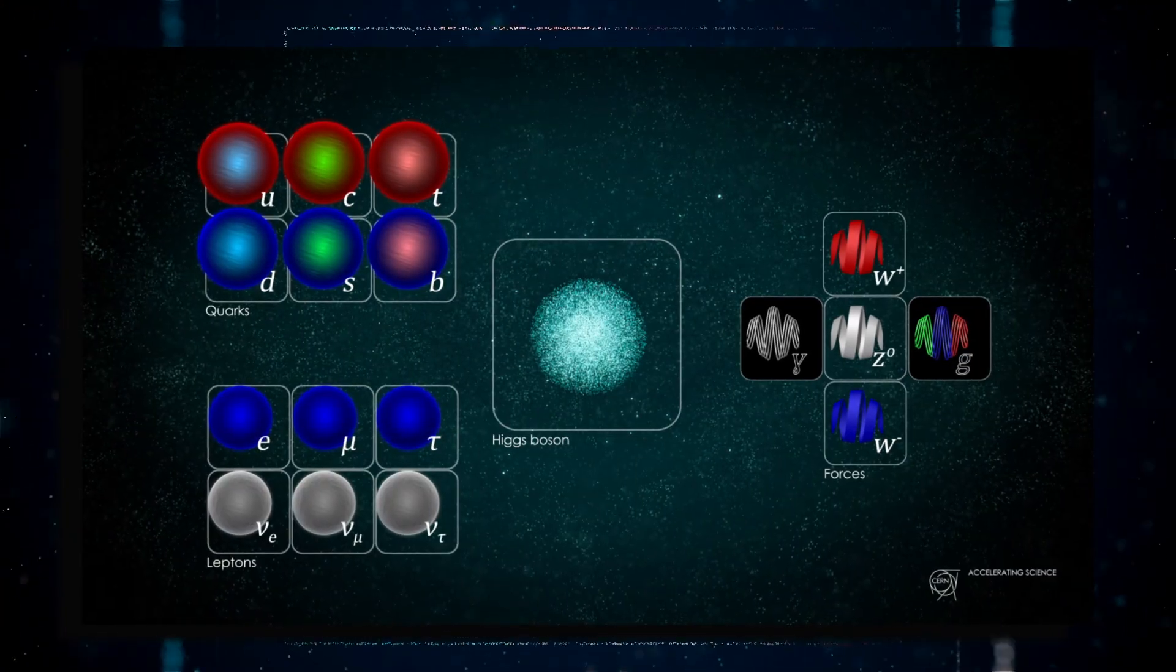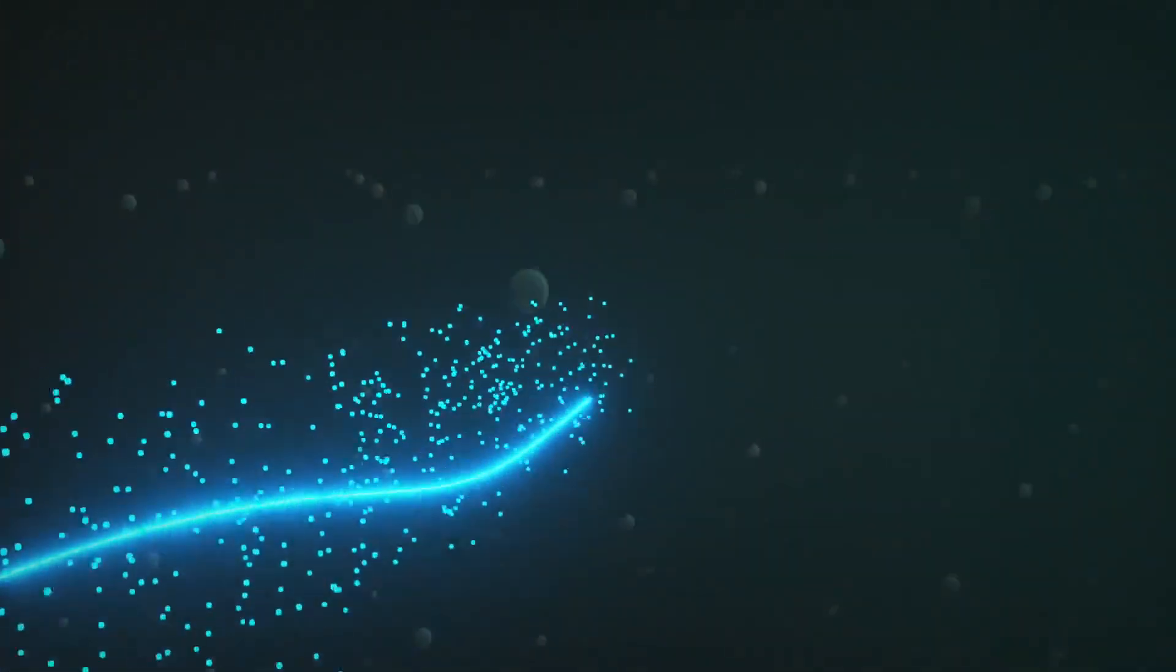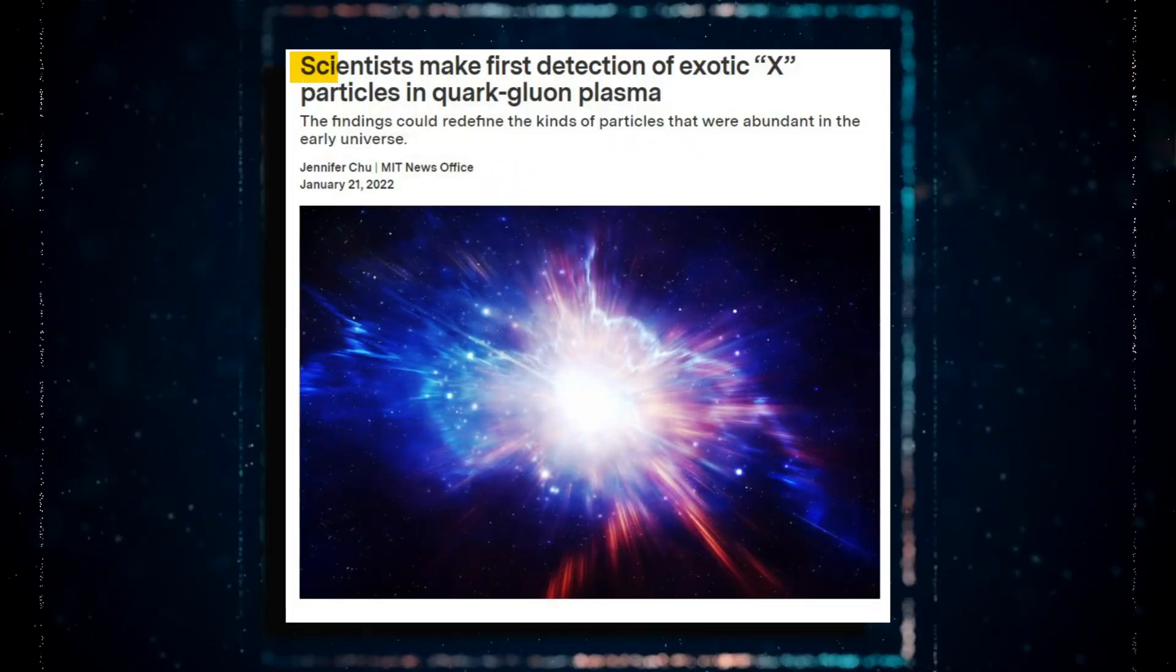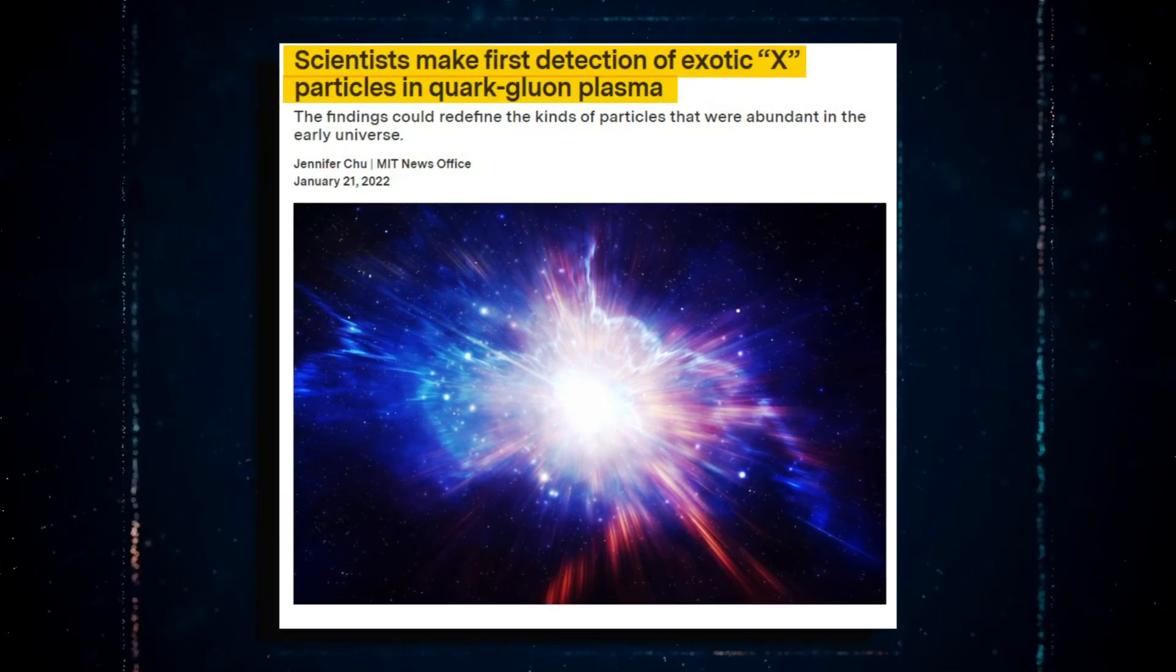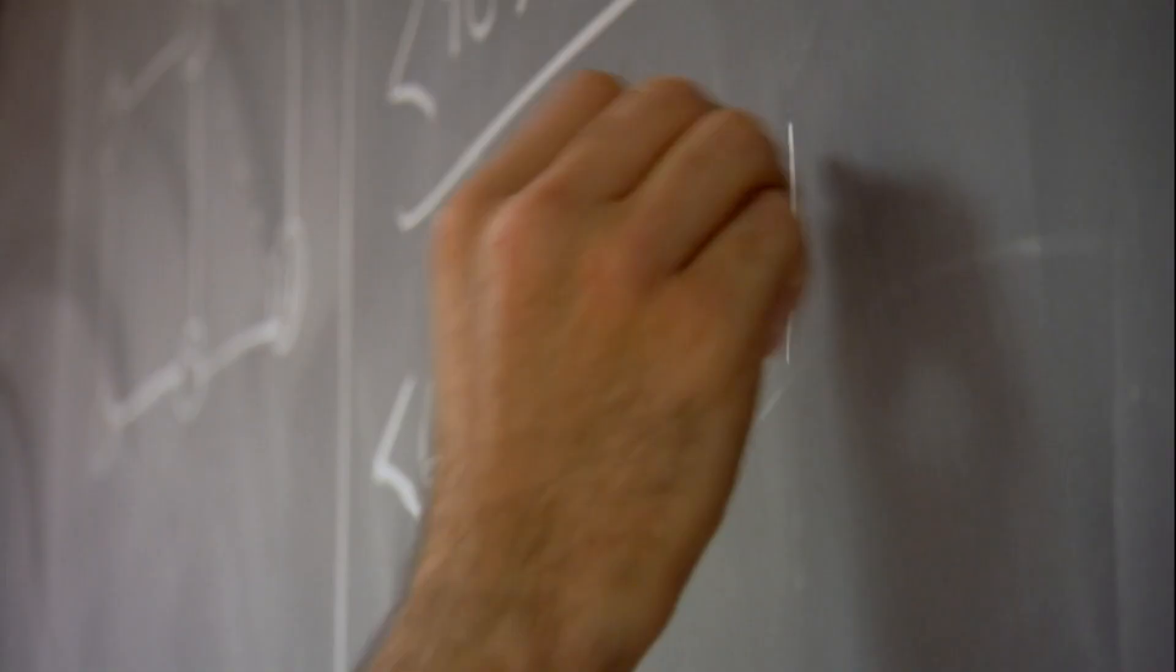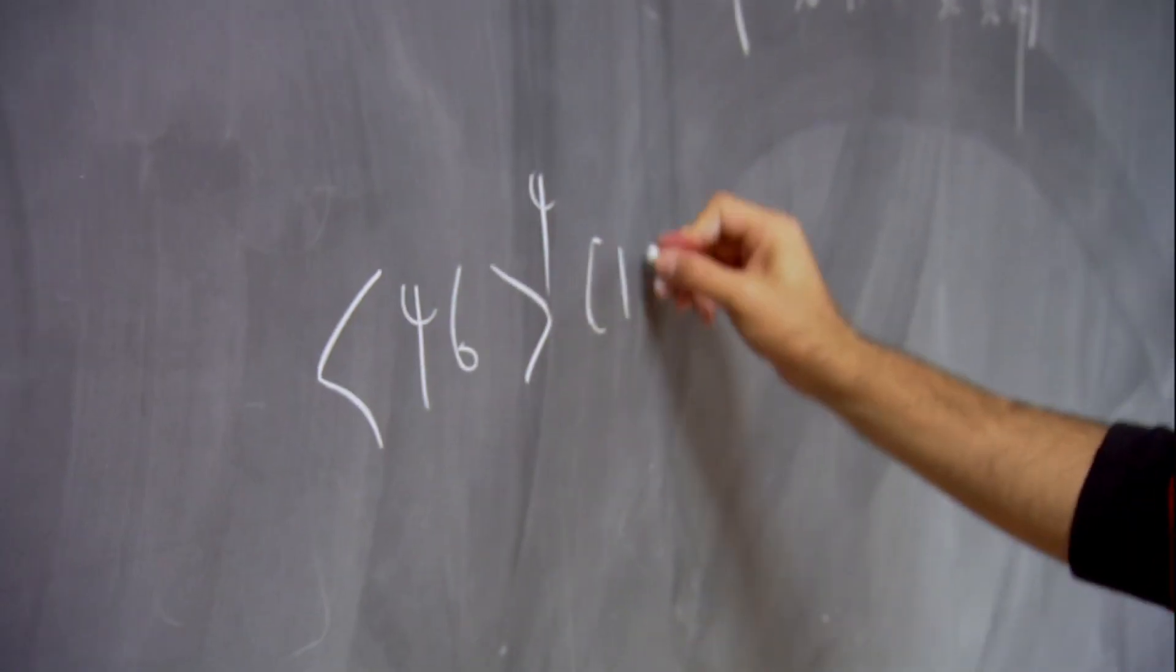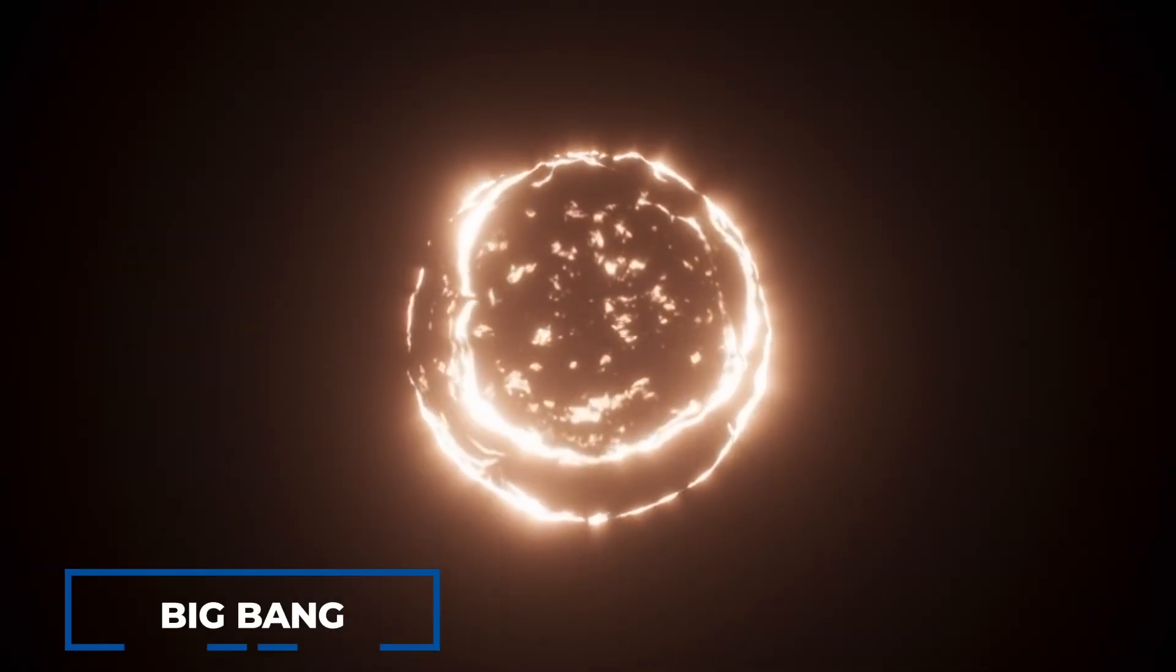If you see a news story about unusual new subatomic particles, chances are they were discovered at CERN. In January 2022, CERN scientists claimed evidence of X particles in the quark-gluon plasma produced in the Large Hadron Collider. The startling reality is that CERN succeeded in replicating a scenario that hasn't occurred naturally since a few microseconds after the Big Bang.